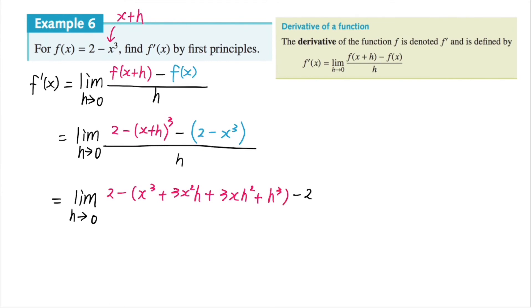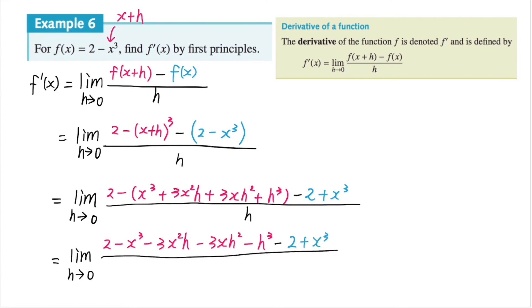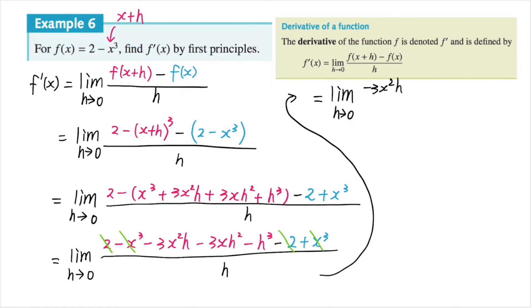We're taking away two, so it's minus two, and taking away negative x cubed, so it's plus x cubed — all over h. Now let's expand and simplify. We have two minus x cubed minus three x squared h minus three x h squared minus h cubed, and minus two and minus x cubed — wait, plus x cubed. So plus x cubed and minus x cubed cancel, and plus two minus two also cancels. We're left with negative three x squared h minus three x h squared minus h cubed, all over h.